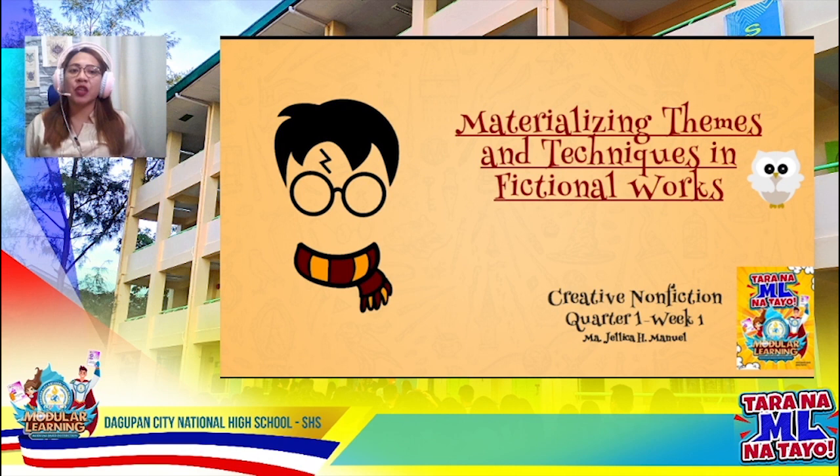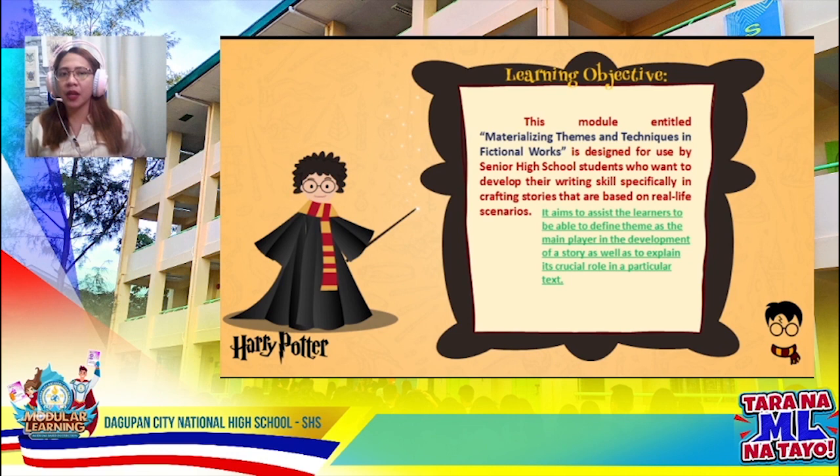Before we proceed with our discussion, let me first give you our main learning objectives. Our main objective is to assist the learners to be able to define theme as the main player in the development of a story, as well as to explain its crucial role in a particular text. So, big question — Theme. What do we mean when we say theme?